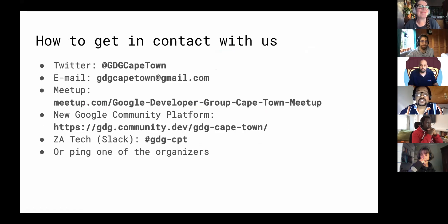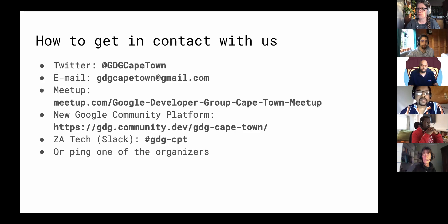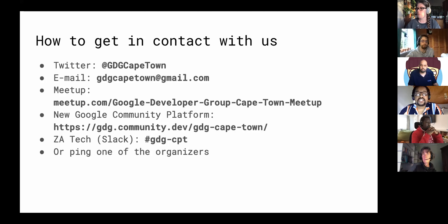How do you get in touch with us? On Twitter, it's @GDGCapeTown, or by email gdgcapetown@gmail.com. On Meetup, it's meetup.com Google Developer Group Cape Town meetup. We also have a GDG platform at gdgcommunity.dev, hashtag gdgcapetown. On Zartek Slack, you can use the gdg-cpt channel, or you can ping one of the organizers.